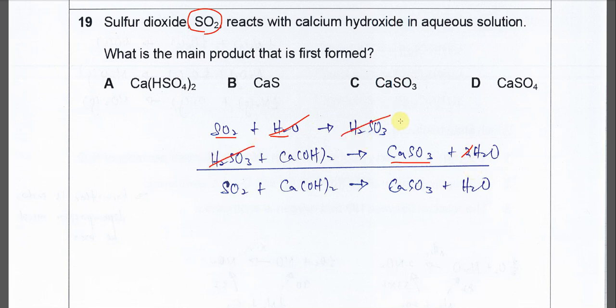So you just need to sum up this, this, this, and this to get the final equation.